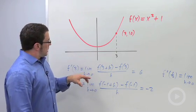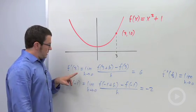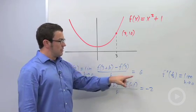In a previous example, we found the derivative of this function at x equals 3. And we used the definition of the derivative, and we got 6.